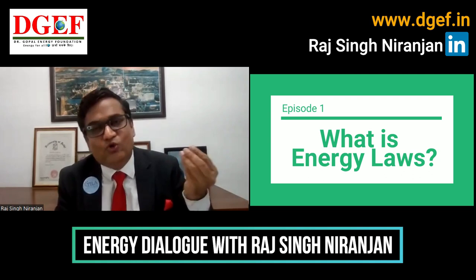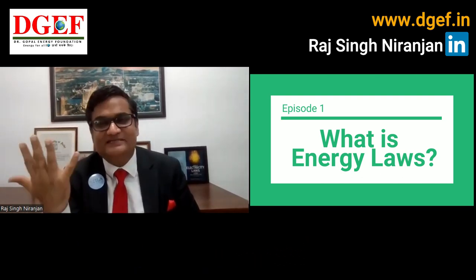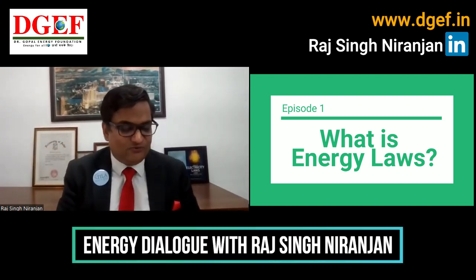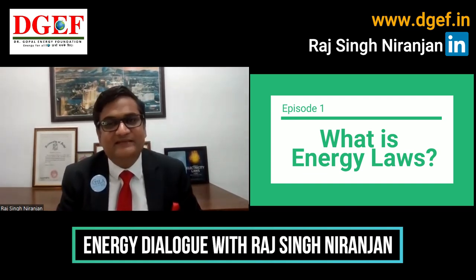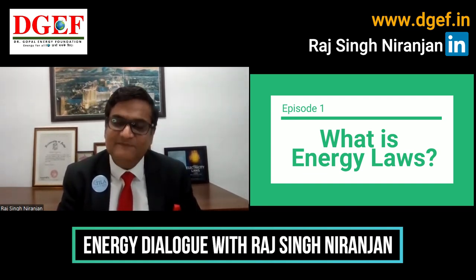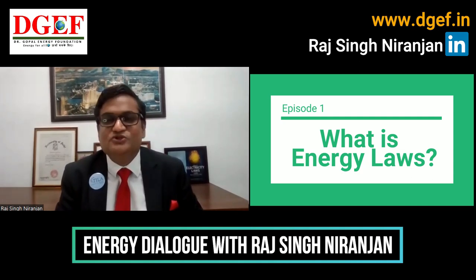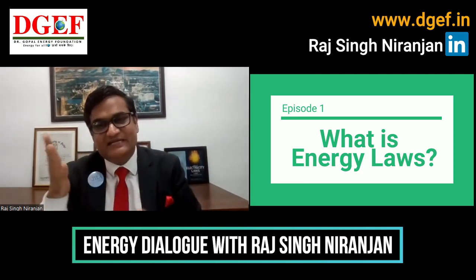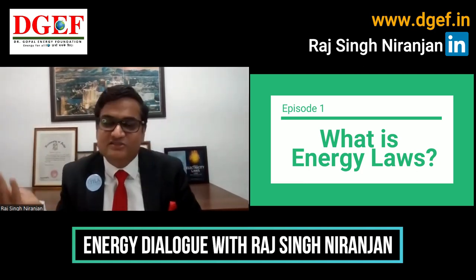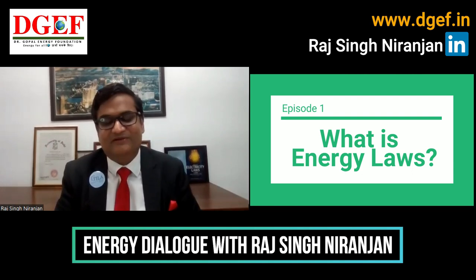In response, the Central Electricity Regulatory Commission collected all applicable law and created a code called the Indian Electricity Grid Code — a systematic collection of the five components of energy law. The first Indian Electricity Grid Code was released in 2000, revised in 2006, and again in 2010. The 2010 version is currently applicable. CERC has now come up with a Draft Grid Code 2022, which will consolidate all laws — constitution, acts, rules, regulations, and gazette notifications — required to run the grid.